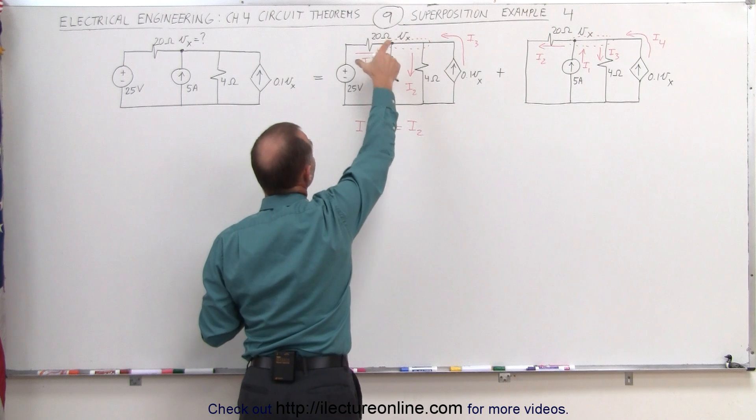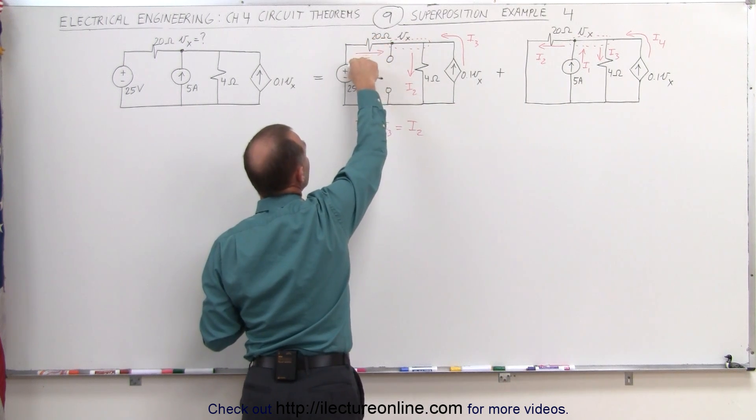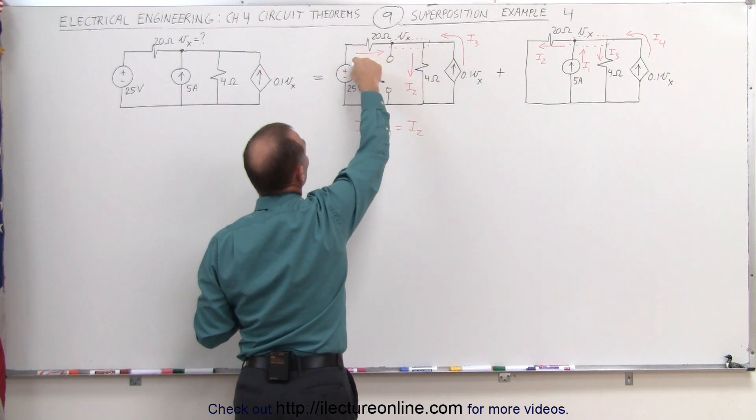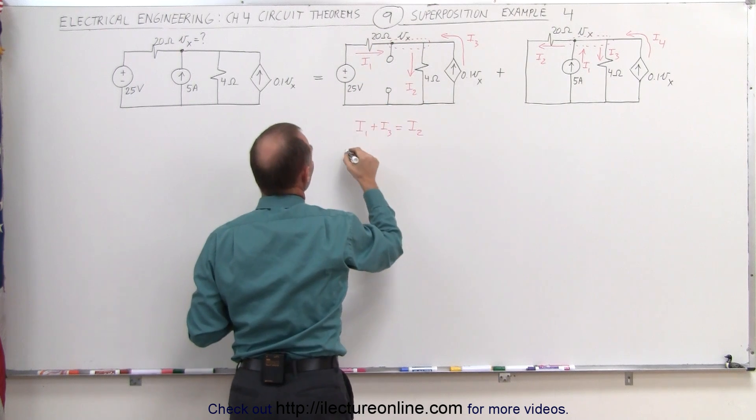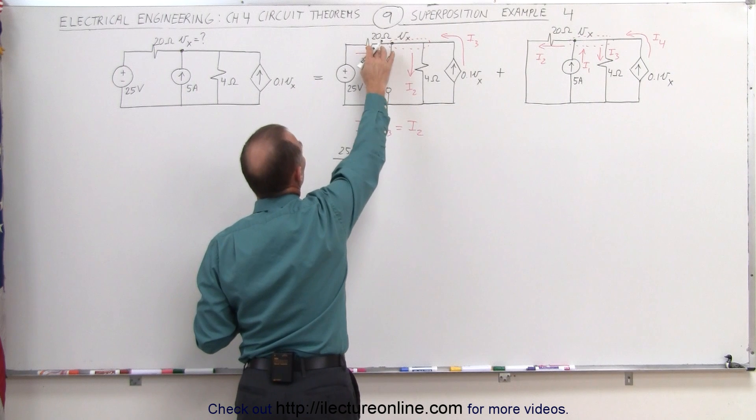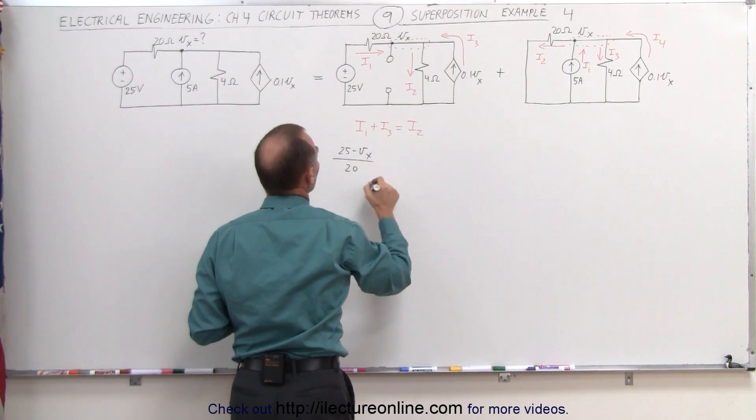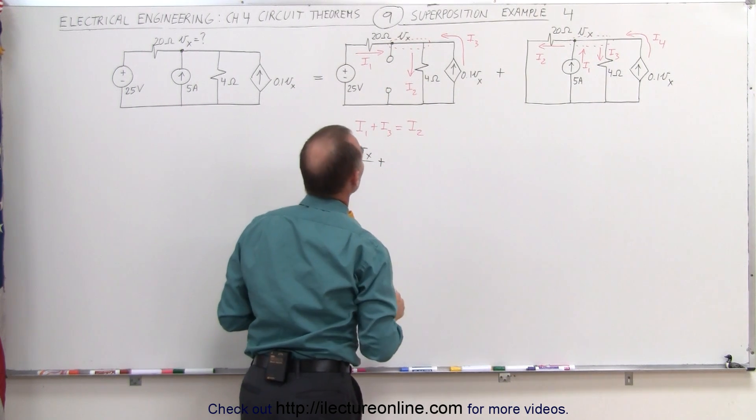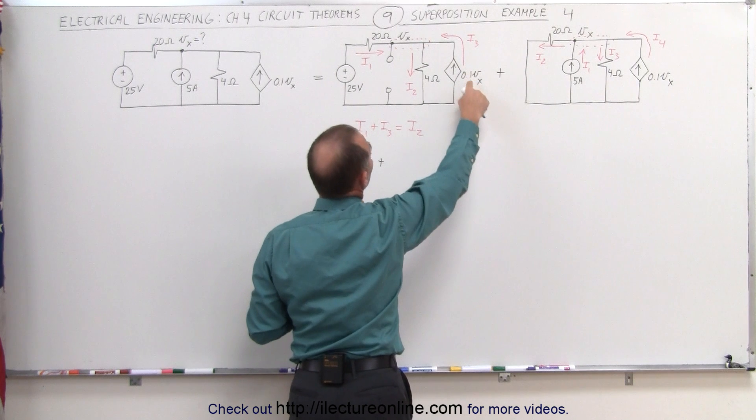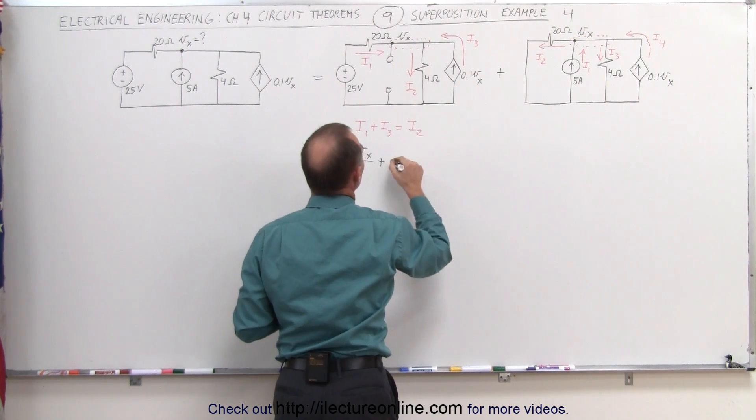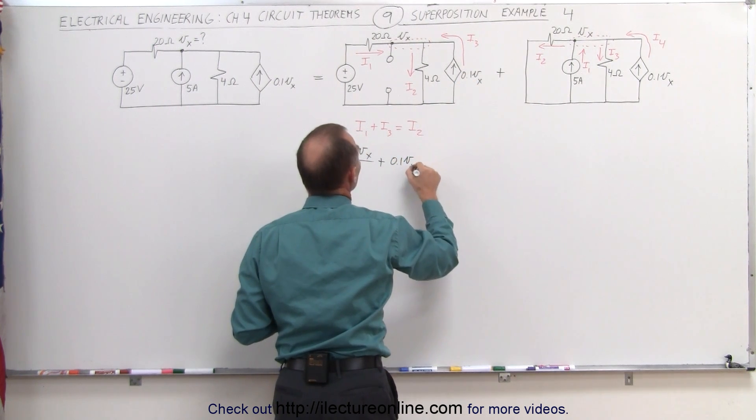I1 can be calculated by taking the potential difference between here and here. That would be 25 minus V sub X, 25 minus V sub X, divided by the resistance in between 20 ohms, plus I3. I3 would simply be 0.1 V sub X, 0.1 V sub X.